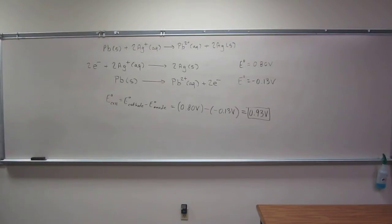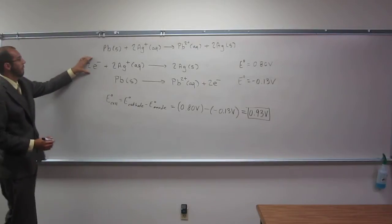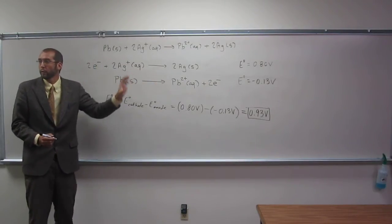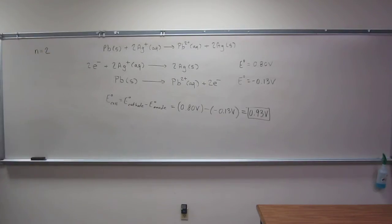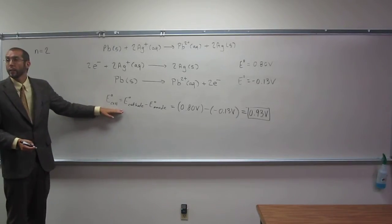So n, the number of moles of electrons transferred is something we need to know, and in this case it's 2. So in order to do this problem, we're going to have to remember how we relate the cell potential here to K.